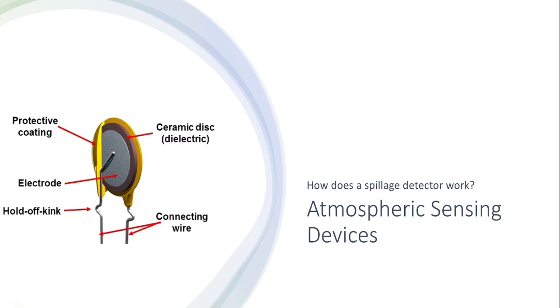This video will explain to you how the spillage detector inside an open flue works. These are also a type of atmospheric sensing device.